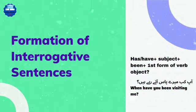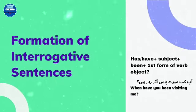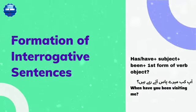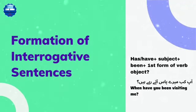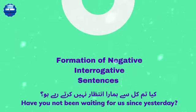Formation of interrogative sentences: has or have plus subject plus been plus first form of verb plus -ing plus object. For example, in Urdu: 'Aap kab mere paas aatay rahi hain?' — meaning: 'When have you been visiting me?'